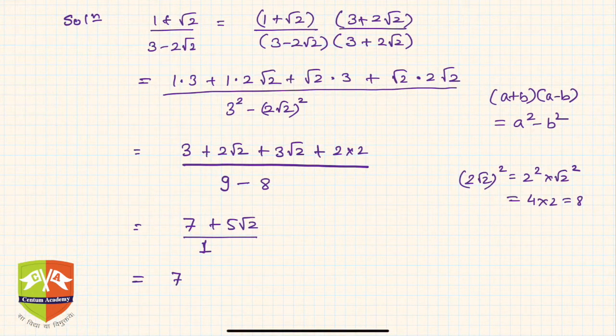Root 2 is 1.414, so it is 7 plus 5 into 1.414. You can do the calculations: 5 fours are 20 carry 2, 5 ones are 5, so it's 7, 5 fours are 20 again, so you get 7.070.